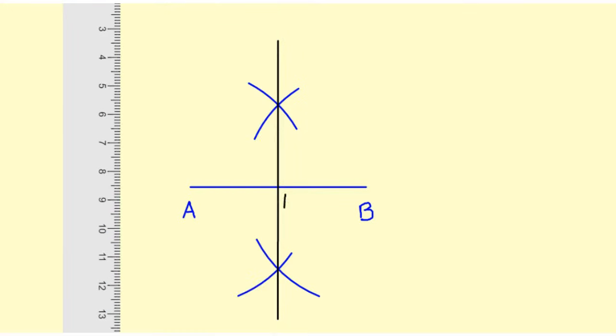I can label the point of intersection anything I want. I'm gonna label it M, maybe just for midpoint. And then another thing we do to show that it's perpendicular is I draw a box in the corner.